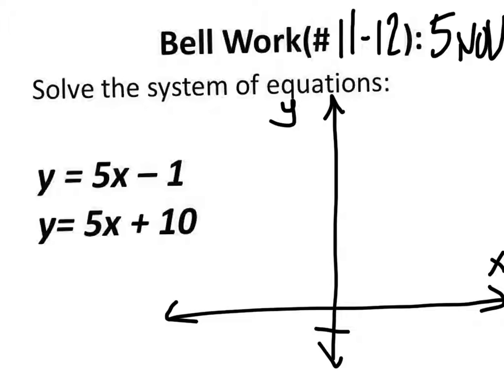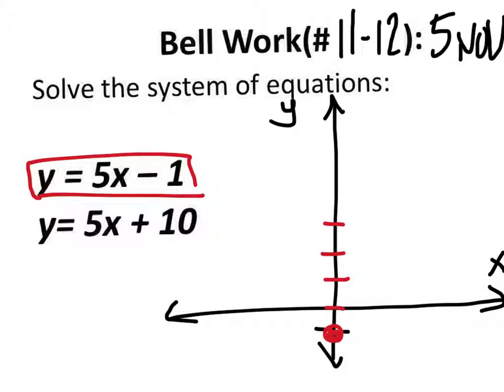The y-intercept is at negative 1, right here. So this one will be in red. It goes up 5 — 1, 2, 3, 4, 5 — and to the right 1. So that's the point (1, 4).